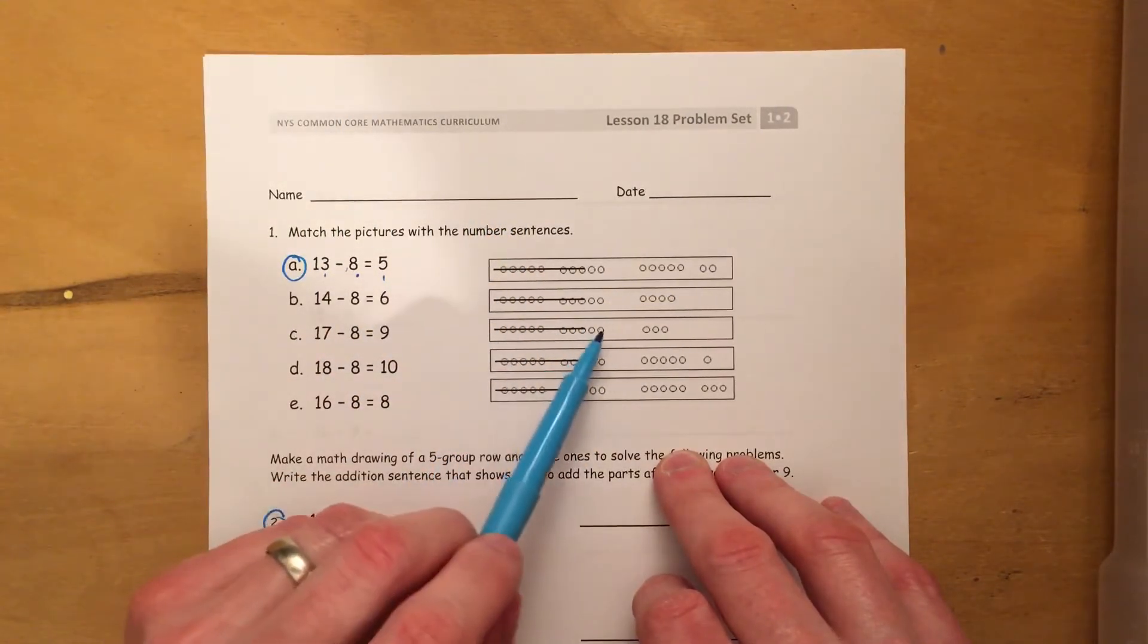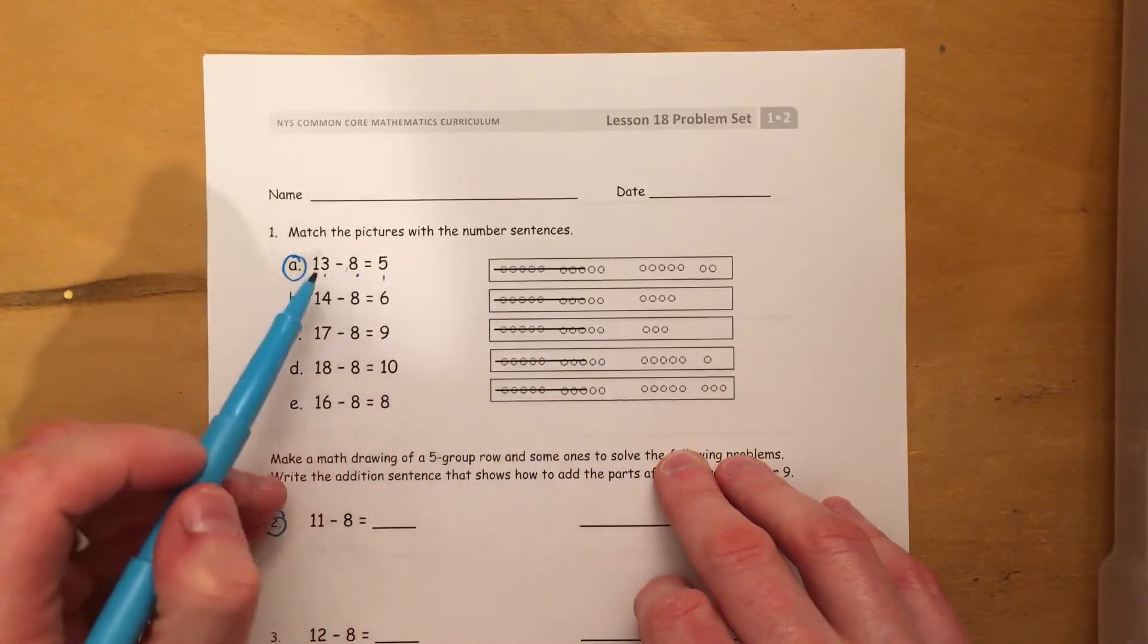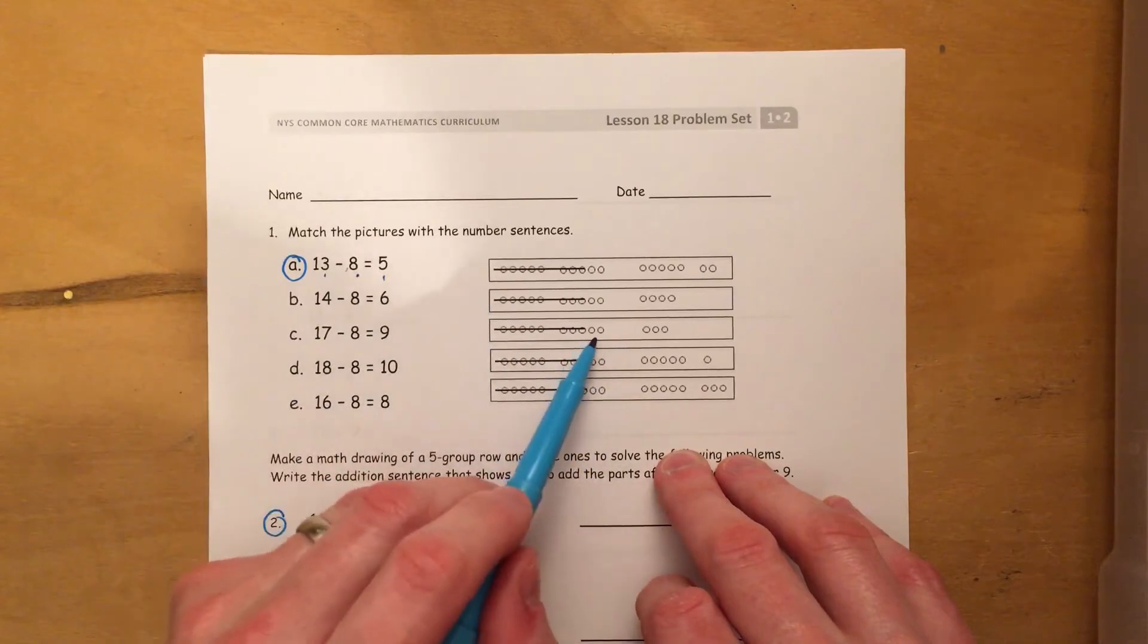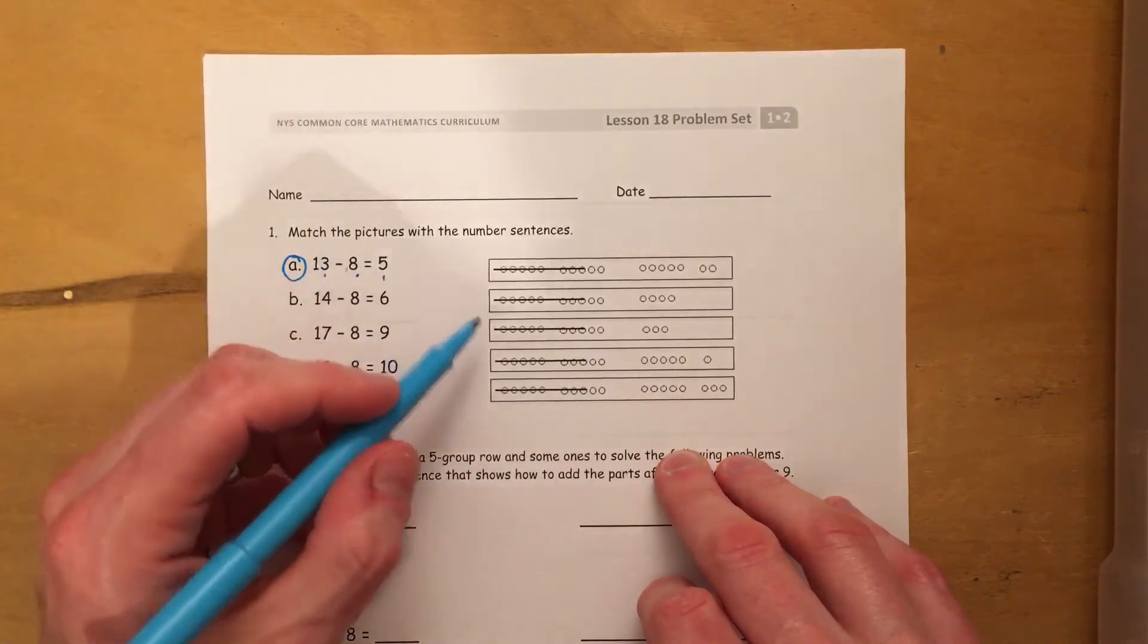Right here we have 10, 11, 12, 13. So it has 13. There are 8 crossed out, and there seem to be 5 left that aren't crossed out.